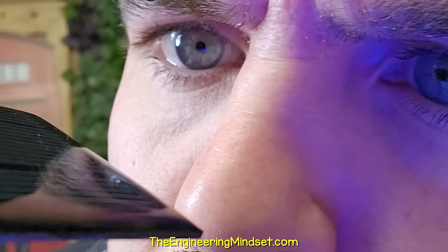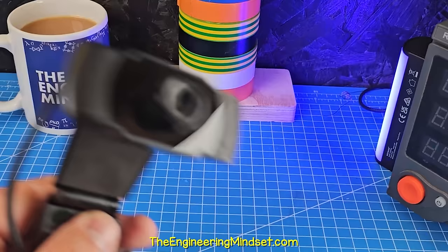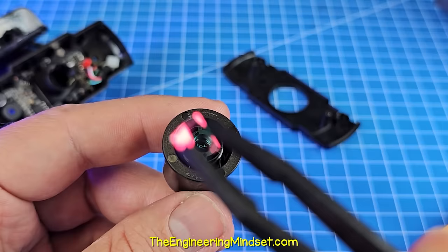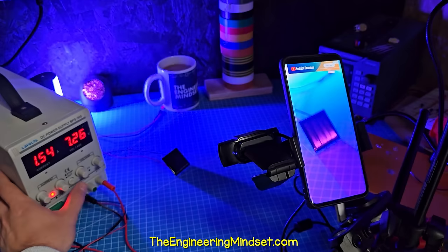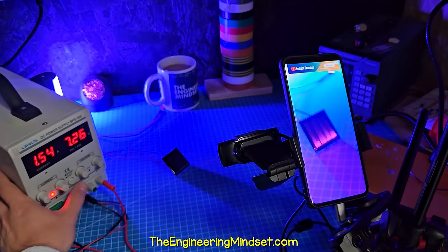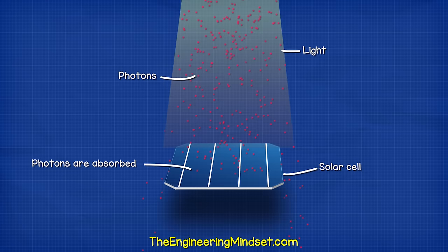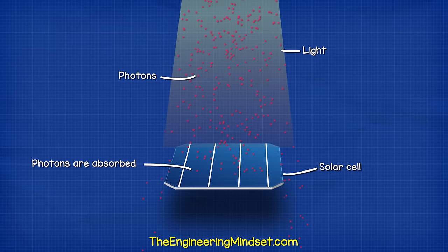But can this be reversed? If we connect the solar cell to a power supply, it produces infrared light. The human eye can't see this. But if we take a camera and remove the filter, we can see that light is being produced from the cell.